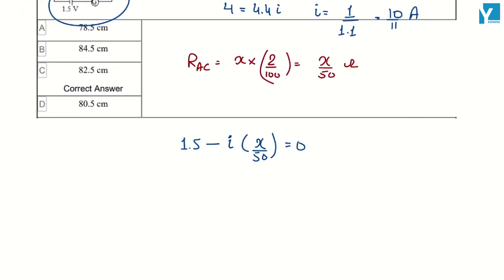So we can calculate the current. 1.5 is equal to 10 by 11 into x by 50. The x value, 55 multiplied by 1.5.